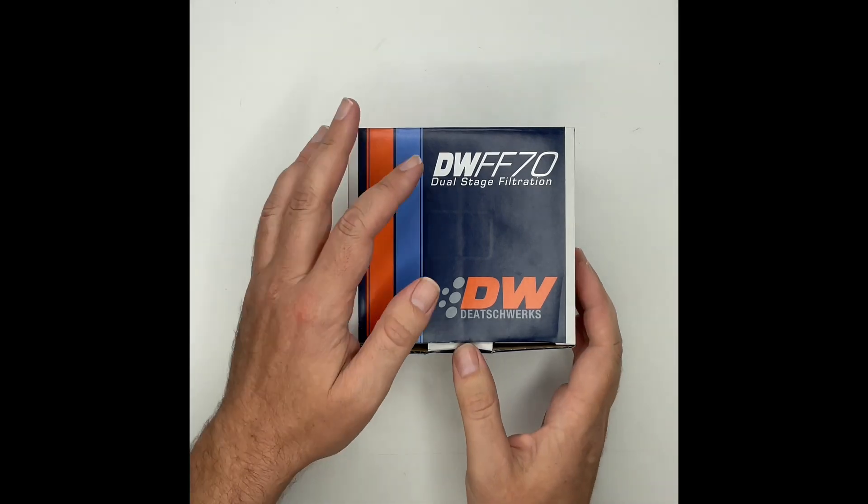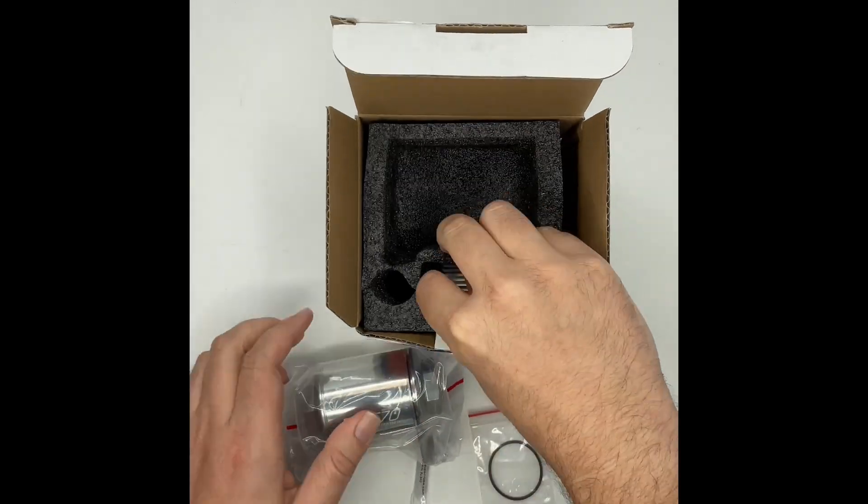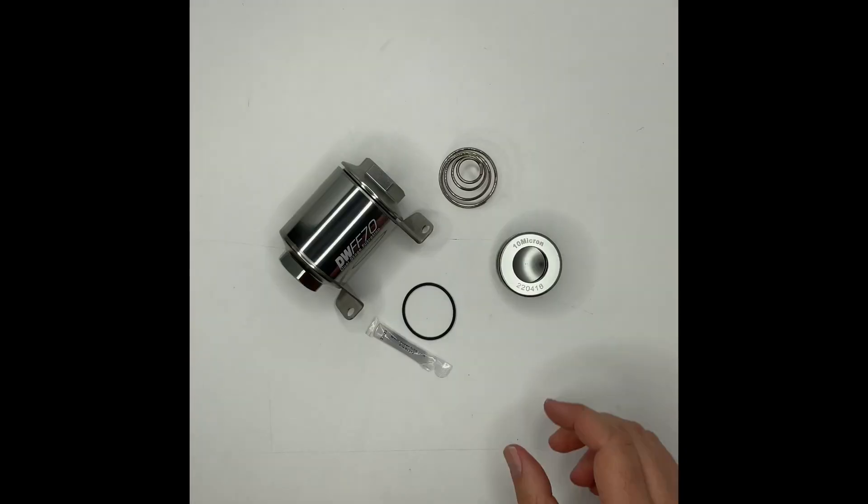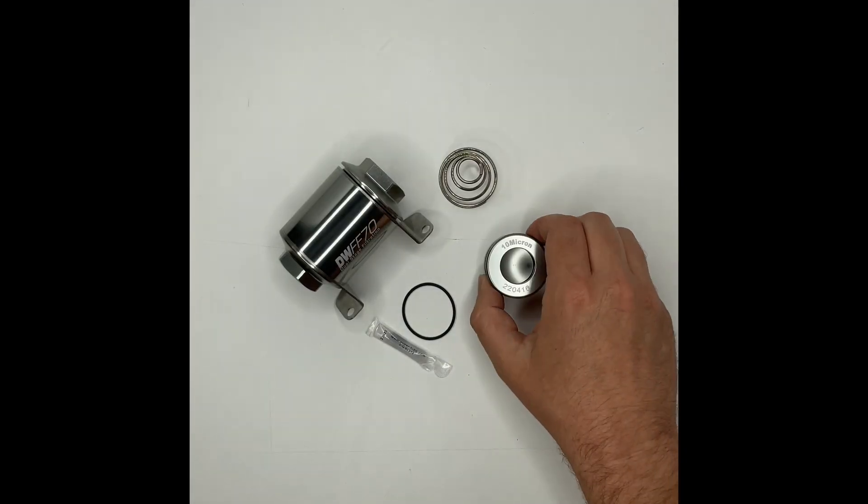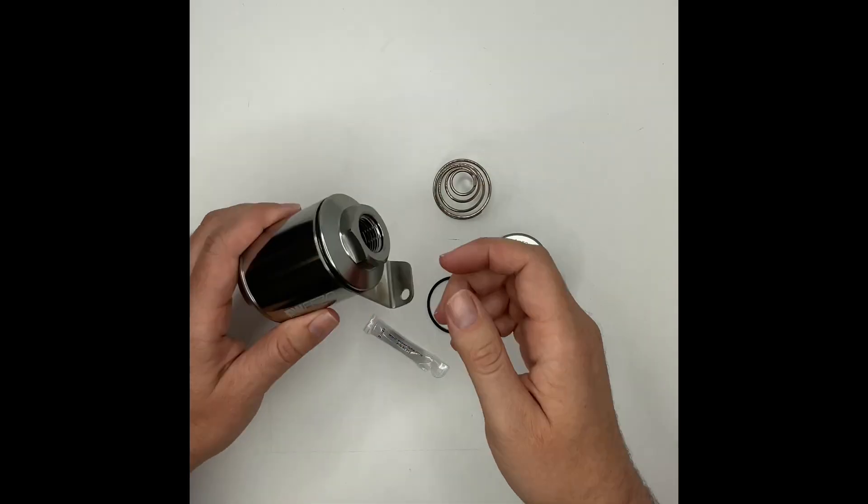In this video we'll be unboxing and assembling the Dtorx inline dual stage filtration system. Inside we have our stainless steel mesh filter element with integrated magnet, a spring, an o-ring and a tube of super lube.